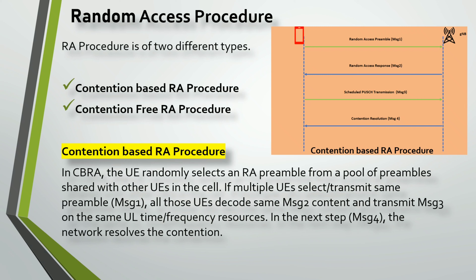Looking at the diagram, Message 1 — the random access preamble — is sent by the UE to the gNodeB. The gNodeB responds with the Random Access Response, known as Message 2. The UE then responds with Message 3 as a scheduled transmission, and Message 4 is where the contention resolution happens.